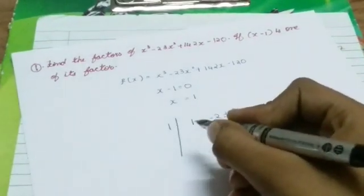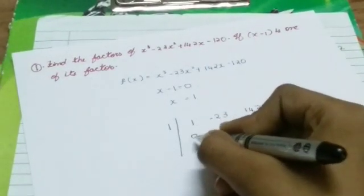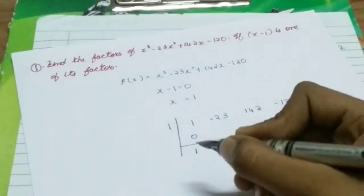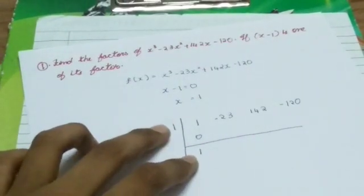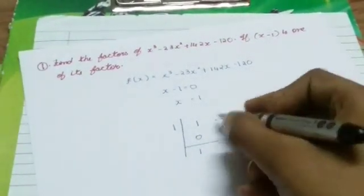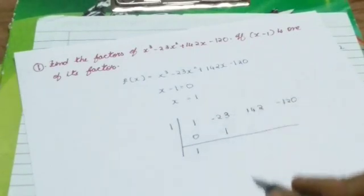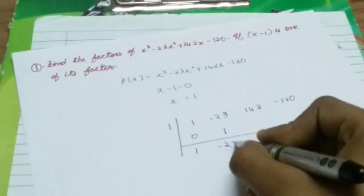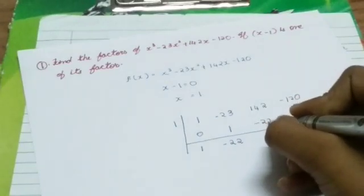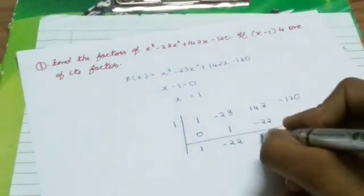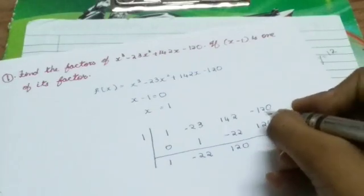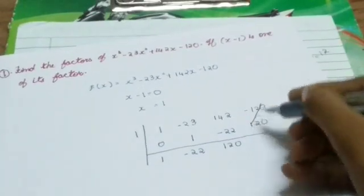The method is: first write 0 and simply add to get 1. Then multiply 1 by 1 to get 1. Adding minus 23 plus 1 gives minus 22. Then minus 22 into 1 gives minus 22. Adding 142 plus minus 22 gives 120. Then 120 into 1 gives 120. Finally, minus 120 plus 120 cancels and we write the remainder.